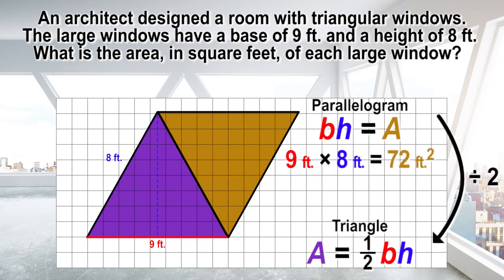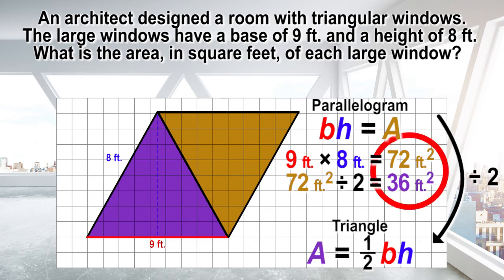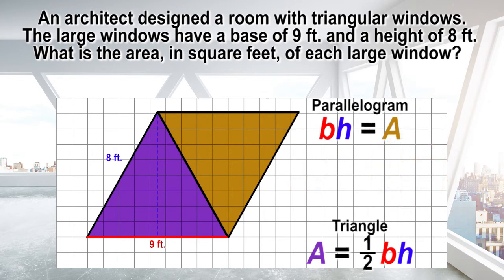Because the parallelogram is created by placing two of the triangles together, in order to find the area of one triangle, divide the area of the parallelogram, 72 square feet, by 2. 72 divided by 2 equals 36 square feet. The area of the triangle is one half of the area of the parallelogram. If the formula for the area of the parallelogram is base times height, then the formula for the area of the triangle is one half of base times height.